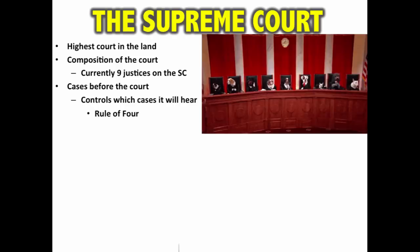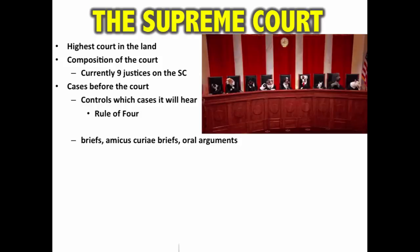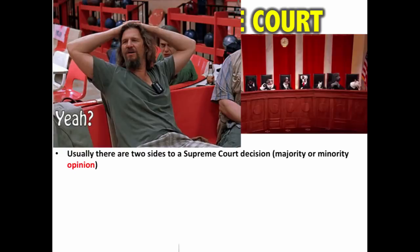Once the court has decided to hear a case, a few things take place before oral arguments. Justices read legal briefs submitted by attorneys on both sides, and they also read those amicus curiae briefs submitted by interest groups. Then they hear oral arguments, during which the justices can interrupt and ask questions — it's a very tense and grueling process. After oral arguments, the justices privately discuss the case and ultimately vote on a decision.